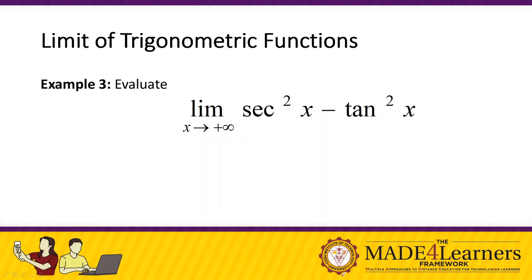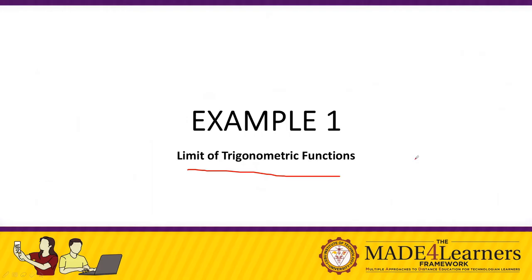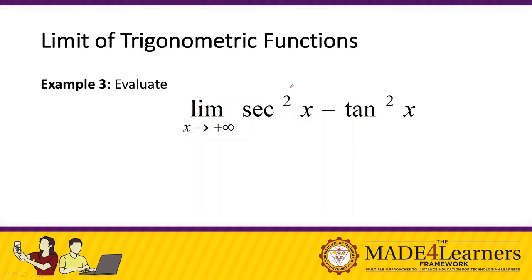Try to observe our given. We have sec²x and we have tan²x. Try to remember, going back to our identities. When it seems unsolvable, try to observe the form of the given — maybe there is a formula or identity that we can use.